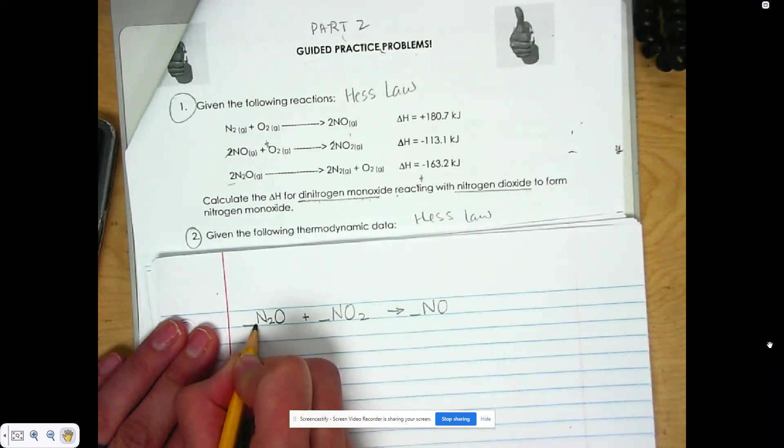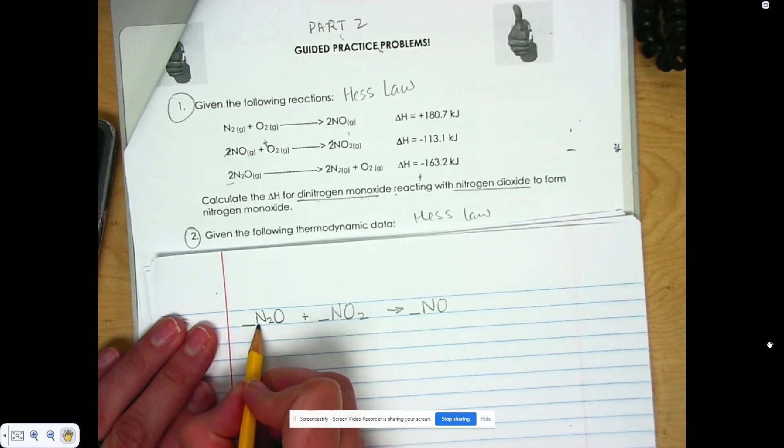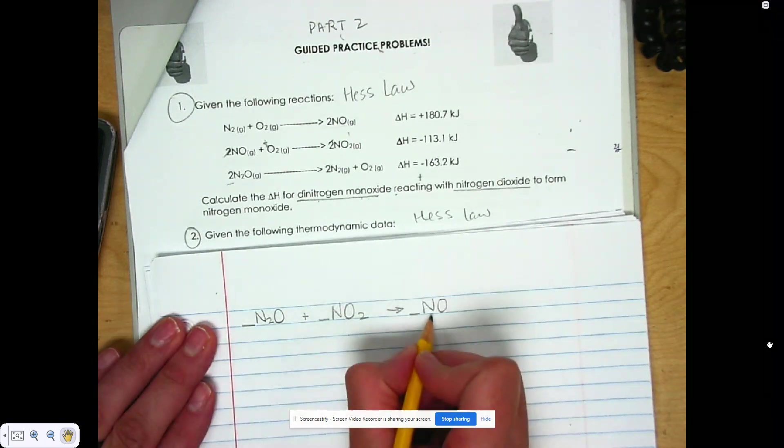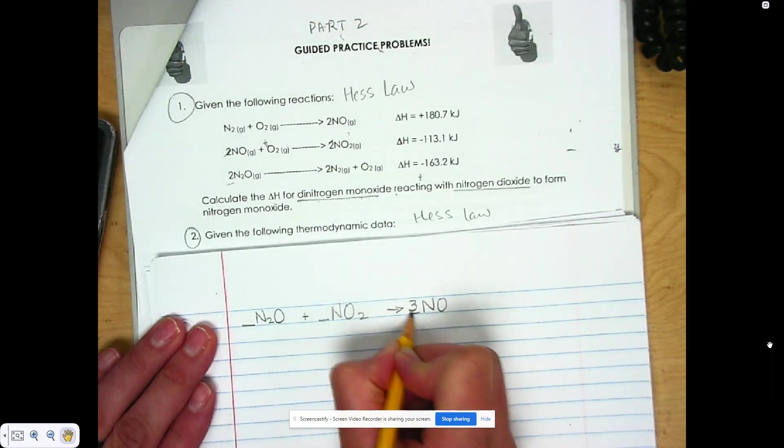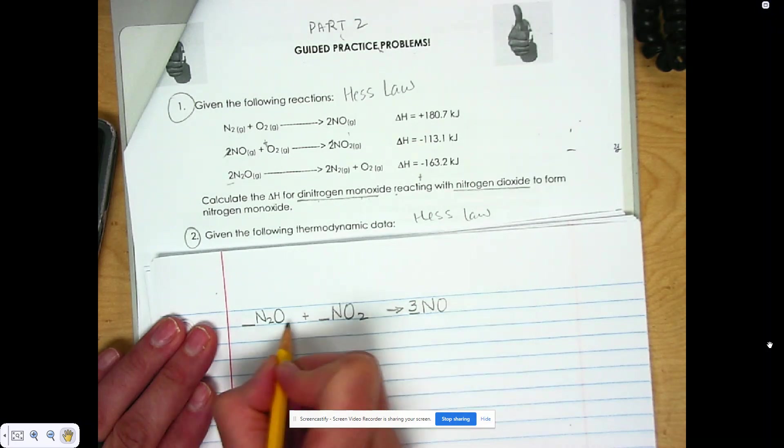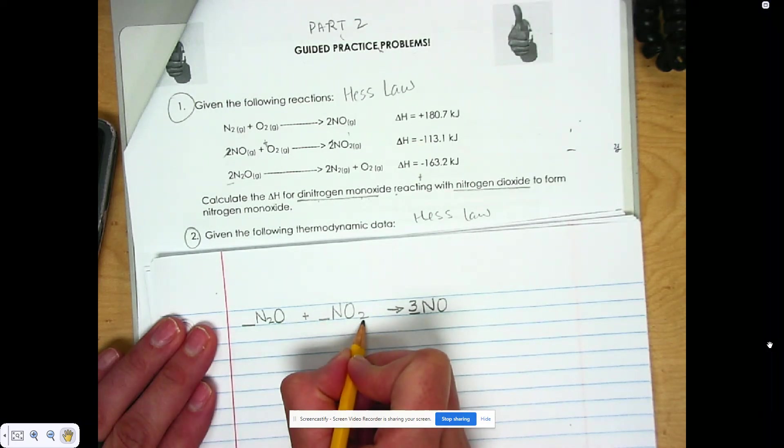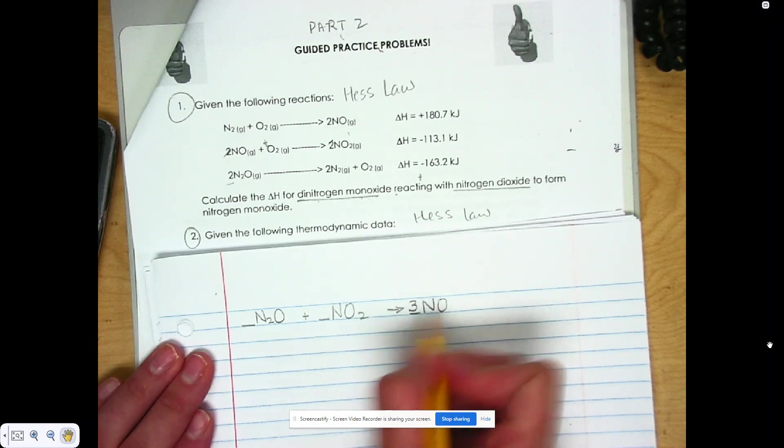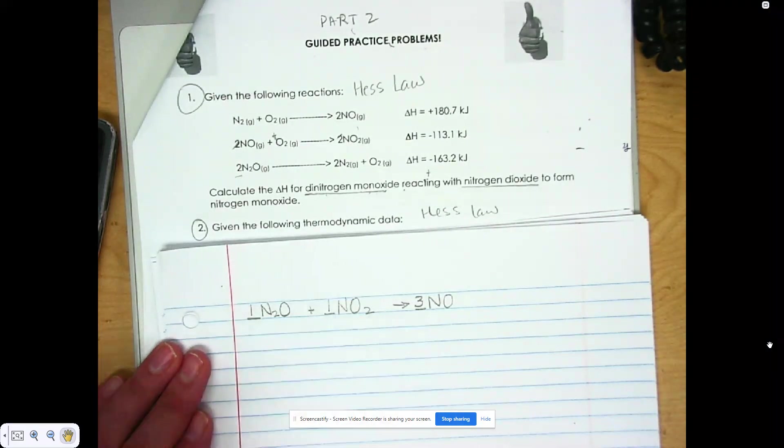Now we just got to balance it out. We got one, two, three nitrogens, but only one here. So I'm going to put a three. Gives me three nitrogens. I have one plus two, that's three oxygens, and three here. We're good and solid, just one everywhere around.